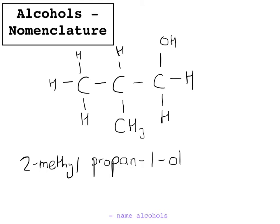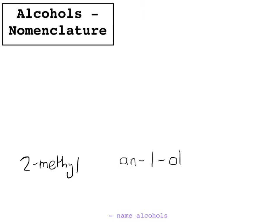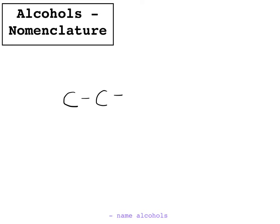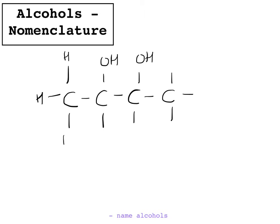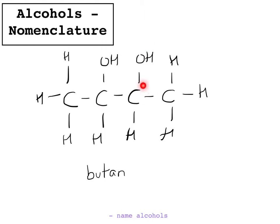If we look at another example where we've got more than one alcohol group — for example, the following alcohol — we've got four carbons in the longest chain, so that is butan-. And then we've got two OH groups: one on the second carbon and one on the third carbon. So we put a dash, then where the OH groups are — 2,3 — and then diol.